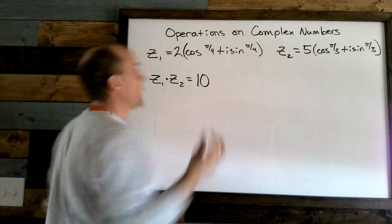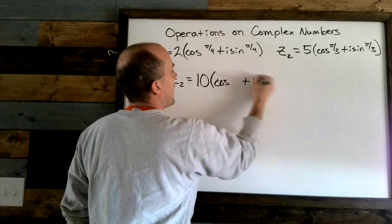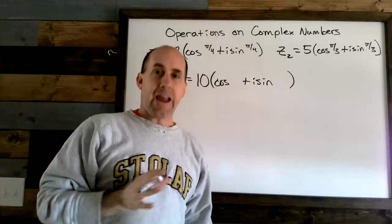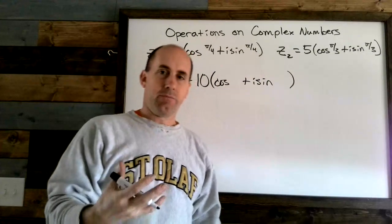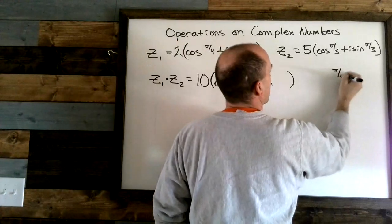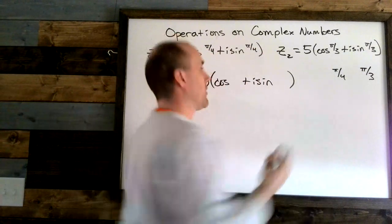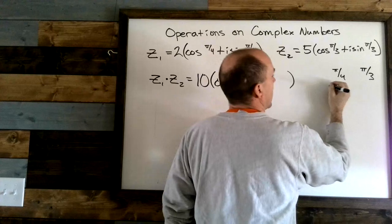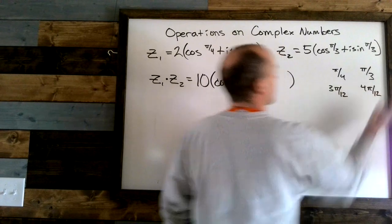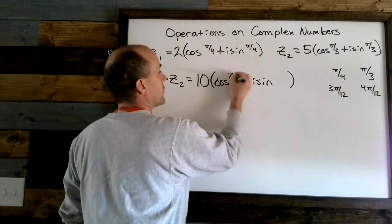Then what happens to the inside — cosine plus i sine — and what do we do with the angles? It turns out that for the angles you add them. We have π/4 and π/3. Finding common denominators, we get 3π/12 and 4π/12. Adding those together gives 7π/12.